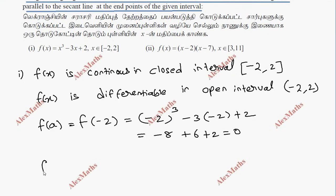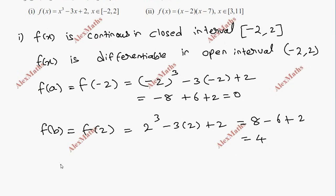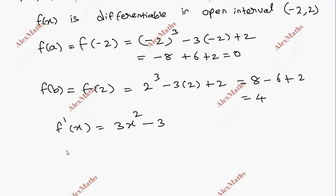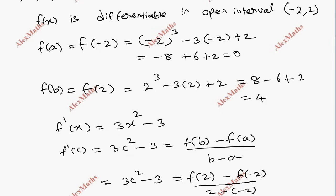So f(b) = f(2) = 2³ - 3×2 + 2 = 8 - 6 + 2 = 4. Now applying the LMVT formula: [f(2) - f(-2)] / [2 - (-2)] = (4 - 0) / 4 = 1.